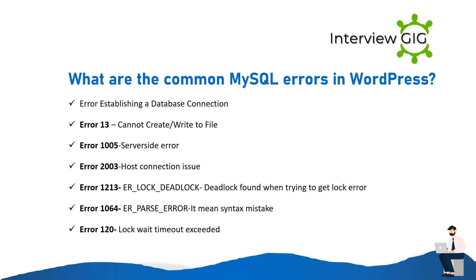What are the common MySQL errors in WordPress? Error establishing a database connection. Error 13: cannot create or write to file. Error 1005: server-side error. Error 2003: host connection issue. Error 1213 ER_lock_deadlock: deadlock found when trying to get lock. Error 1064 ER_parse_error: syntax mistake. Error 120: lock wait timeout exceeded.